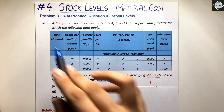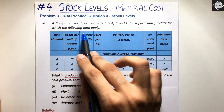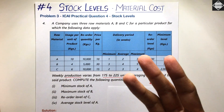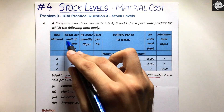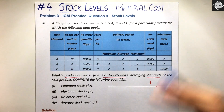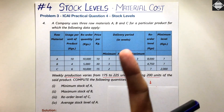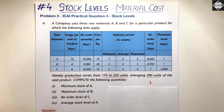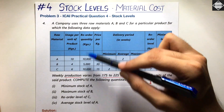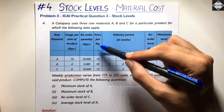A company uses three raw materials A, B, and C for a particular product. In the second column, they have given us usage per unit of product in kgs — that means consumption, how much raw material we use to produce just one unit of product. To create one unit of finished good, we need 10 kgs of A, 4 kgs of B, and 6 kgs of C. Then they have given us reorder quantity, which means EOQ — economic ordering quantity — 10,000, 5,000, and 10,000 respectively.